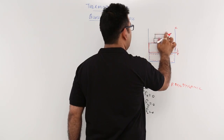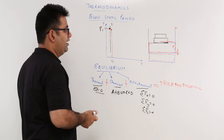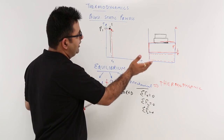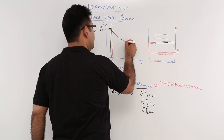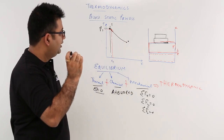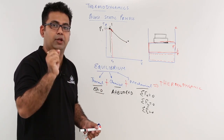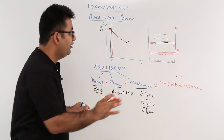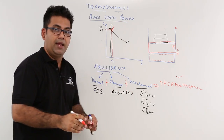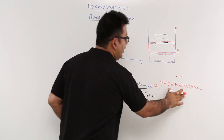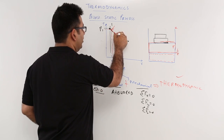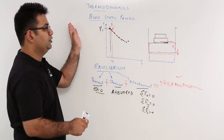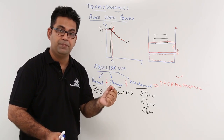Then you remove another weight on top, and there is a little more upward travel, bringing you to another state. When you keep on removing these weights, the piston keeps moving upward, and you get a process from state 1 to state 2. The great thing about this is that every intermediate state achieved is under thermodynamic equilibrium — nothing unbalanced is happening in the system at any intermediate state.